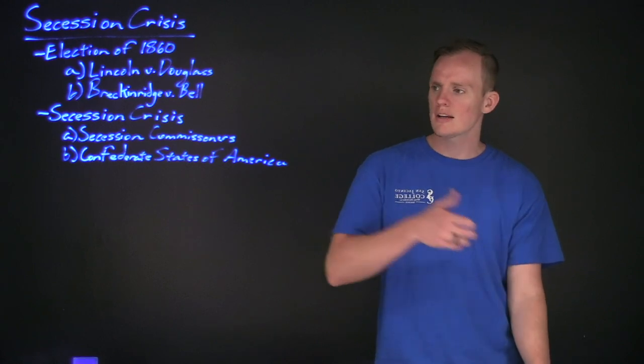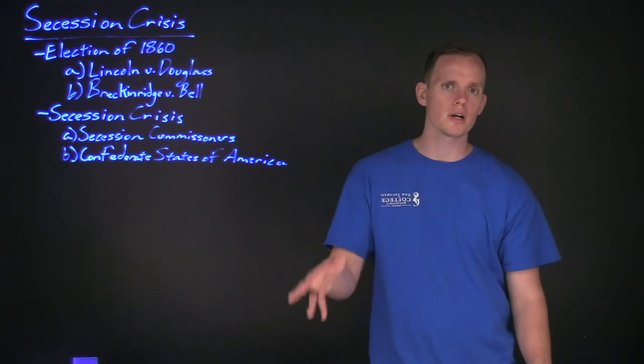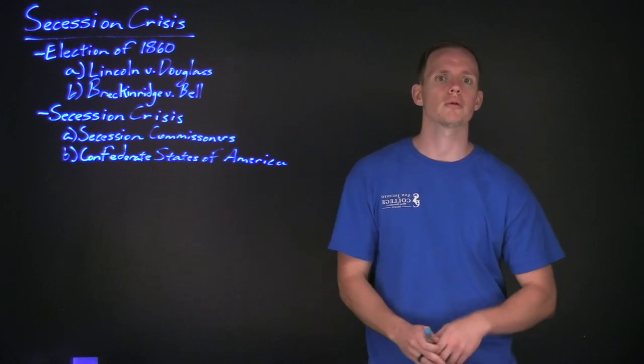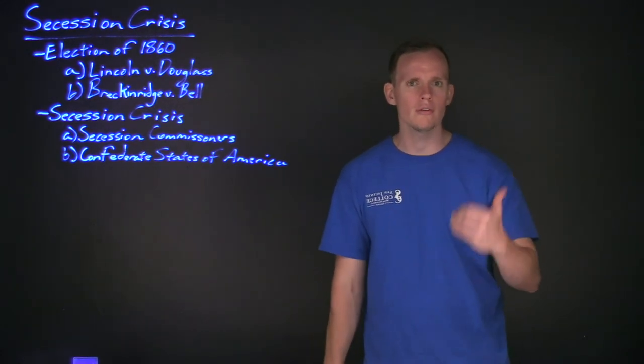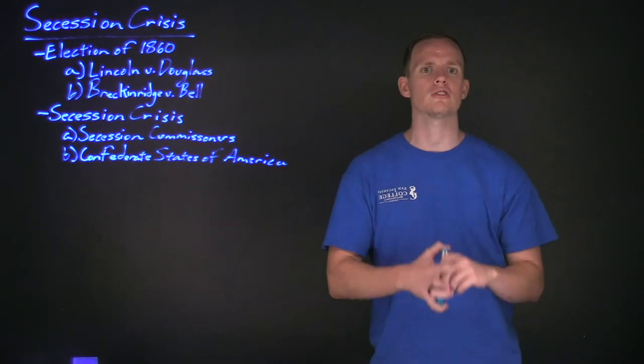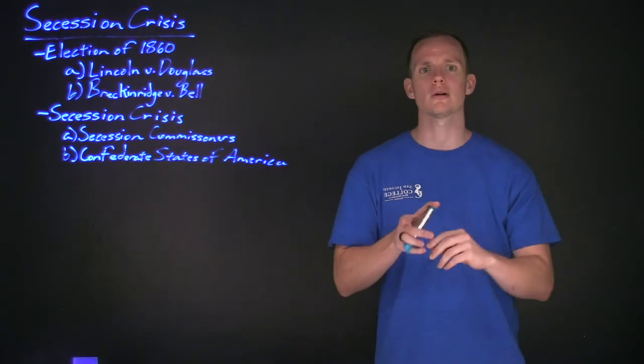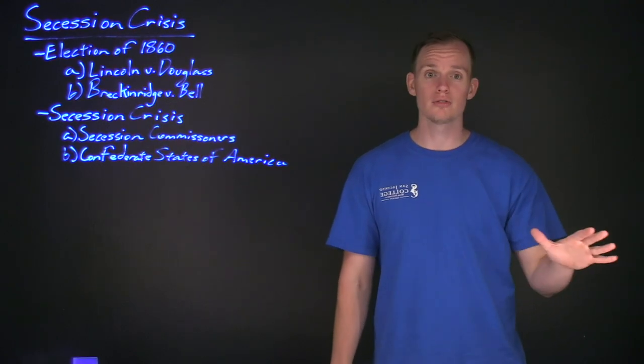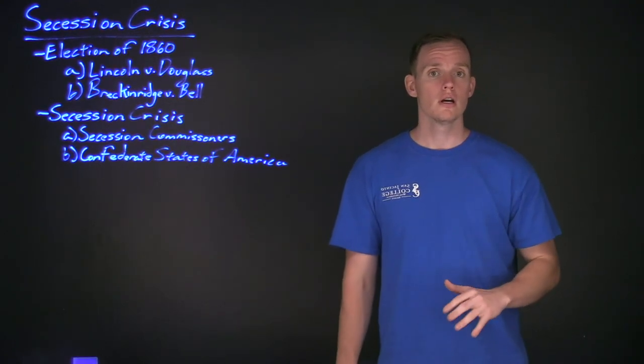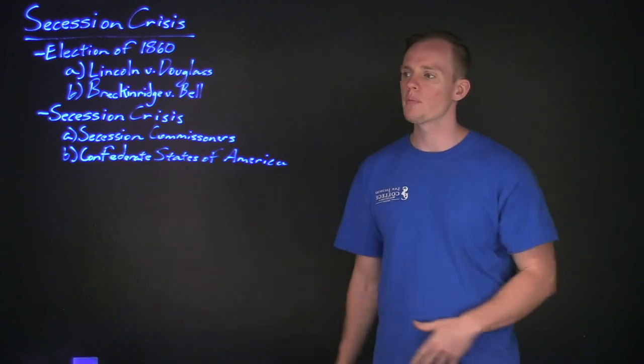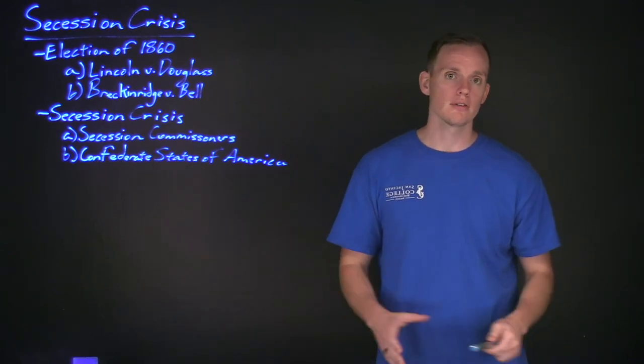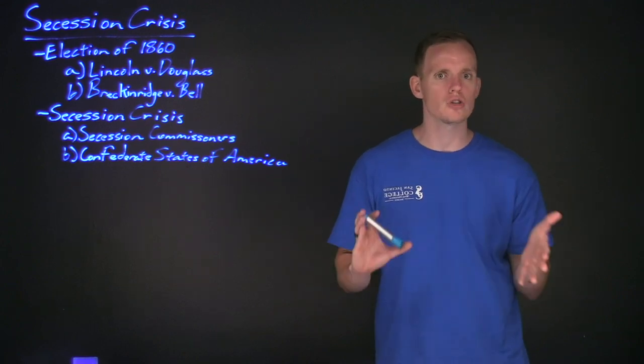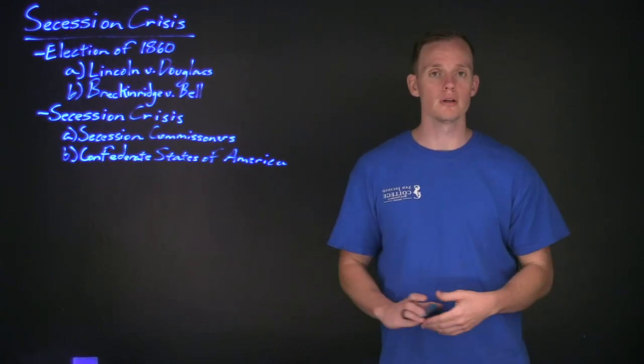As this new government was being formed, Davis' vice president, that of Alexander Stevens, would go out and say that the cornerstone of the Confederacy was to preserve that institution of slavery, to maintain their racial-social order, to keep whites on the top and have blacks viewed as inferior. It will be this rhetoric that would serve the basis for the founding of the Confederate States of America, and it's very hard to argue against slavery being the issue to why these states formed a new nation.